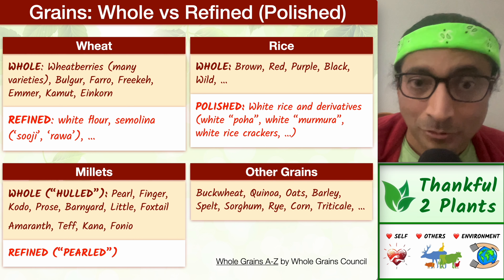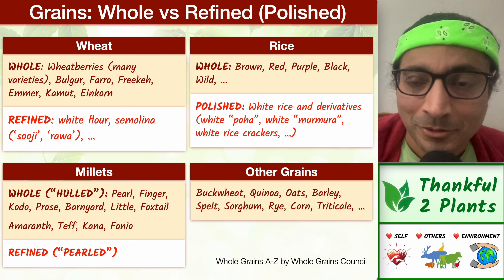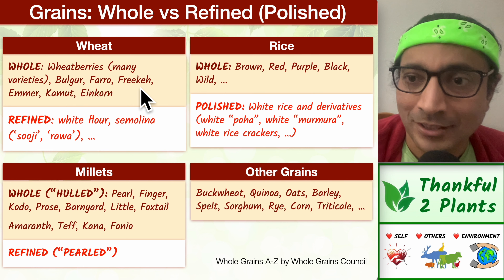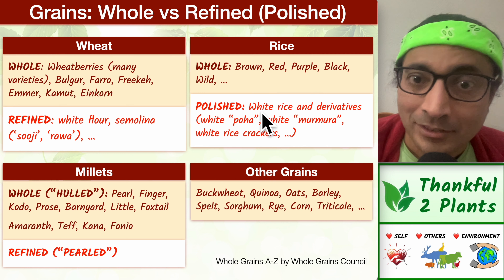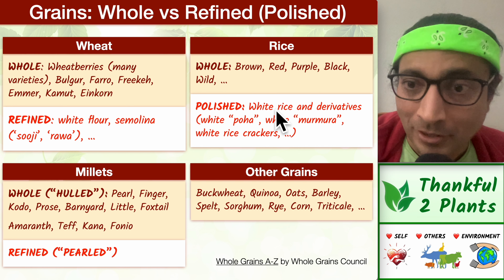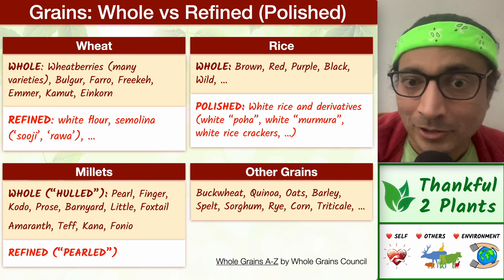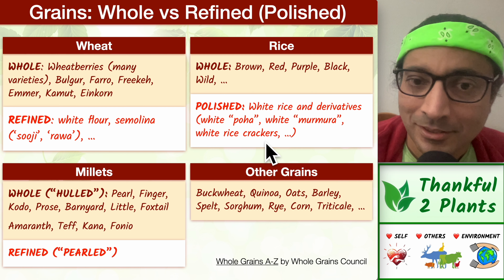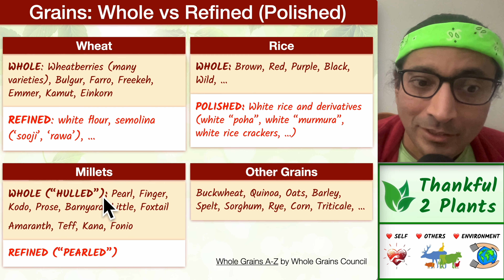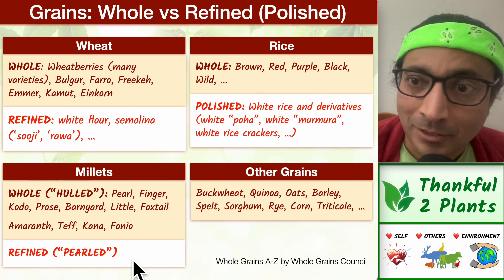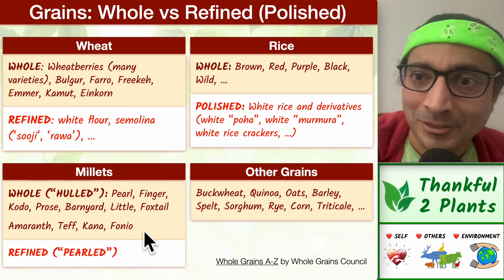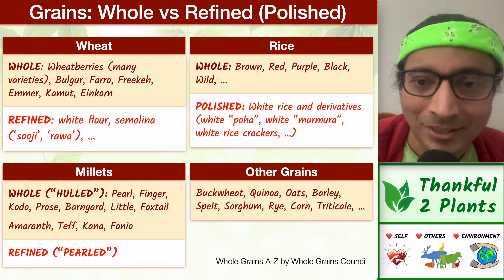Somebody who wants to eat bran and germ along with the endosperm would buy actual whole grains. In the rice world, white rice is obtained by polishing brown rice, and can then be converted to poha, murmura, white crackers, rice crackers, and so on. In the millet world, there is hulled versus pearled — the hulled versions have more bran and germ, so the hulled versions are preferable.